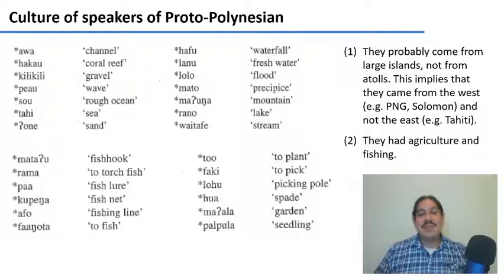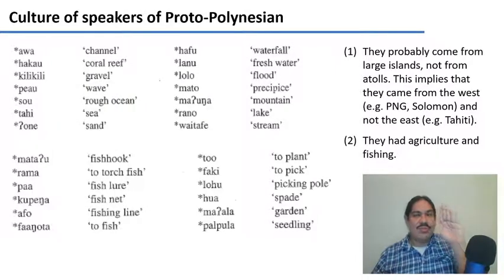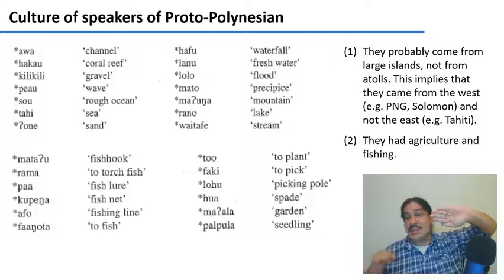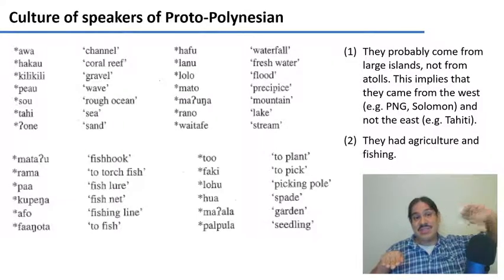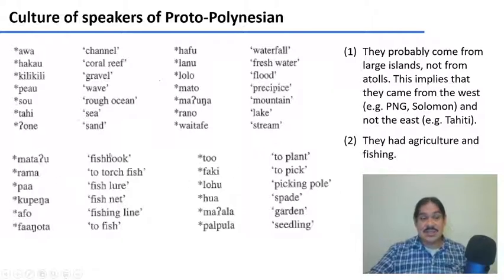They probably came from larger islands because we can reconstruct words like mountain, lake, stream, and waterfalls — things that small atolls in the middle of the ocean don't have. We find the larger islands on the west of Polynesia, like the Solomon Islands and Papua New Guinea, and the more we go towards the east, we find smaller islands and more atolls — small islands like Tahiti, but also tiny atolls like Kiribati. So it's safe to assume they probably came from the direction with the large islands and then traveled eastward. They obviously had some form of agriculture and fishing because we can see there are reconstructed forms for fishnets, fishing, planting, spade, and garden. The words we reconstruct give us hints about the culture of the proto-Polynesians from 3,000 years ago.